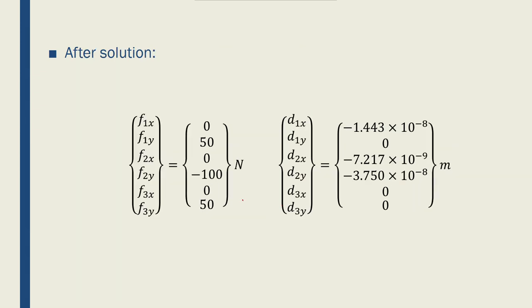So if I solve for them, I'll end up with these numbers. From the boundary conditions, I know that these are true. These two, f2x and f2y, were the external forces. And f1x was again known from the fixed or boundary condition at node 1.